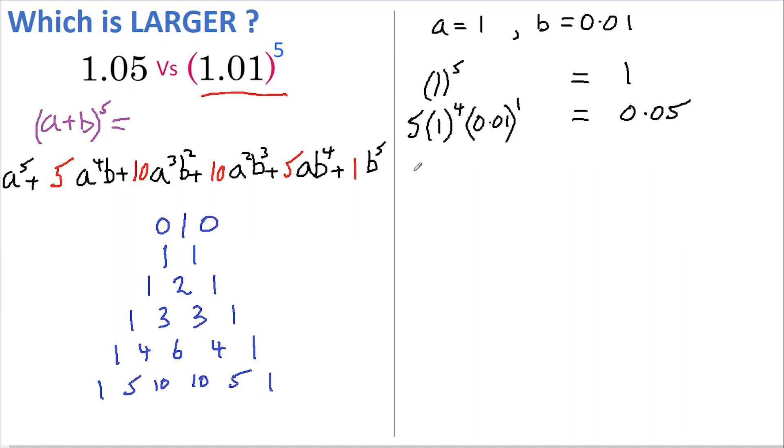But just for completeness I'll do the next term, because there's something interesting I want to show you. So the next row is 10 times 1 to the power of 3 times 0.01 squared, and that gives 0.0010.